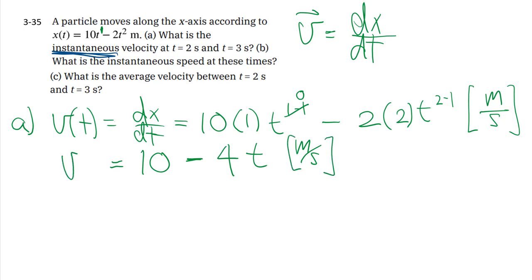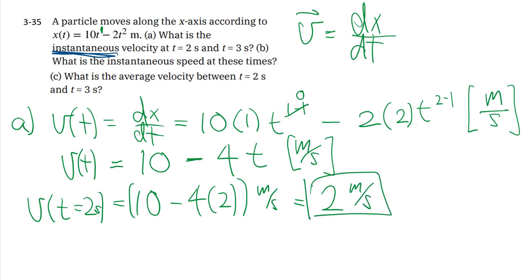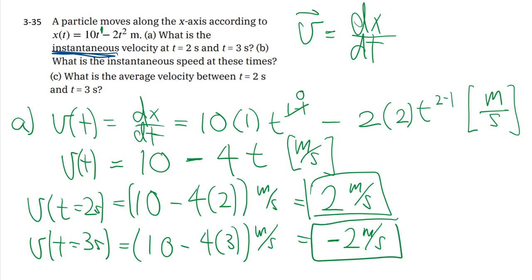Once we have that velocity function, v of t, then we can sub in the various specific times that were asked for and get those numbers. And we're not going to sub in the second here, because we know that the units will work out to a meter per second. So that's 10 minus eight, two meters per second at t equals two seconds. And then they also ask us at three seconds. So that's 10 minus four times three, giving us negative two meters per second. And it's perfectly all right for velocity to be negative, because that just means it's in the opposite direction to whatever we define to be positive. So that's the instantaneous velocity.